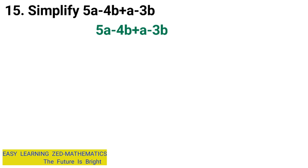So I'll write 5a, then I'm going to look at any term that has 'a' in it. I've got 'a' there, which is positive a. So it's going to be 5a plus a.